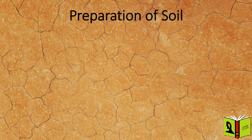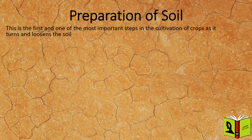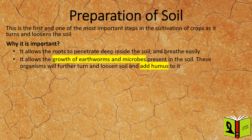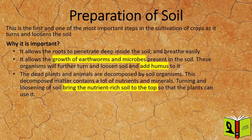Preparation of soil. This is the first and one of the most important steps in the cultivation of crops, as it turns and loosens the soil. It allows the roots to penetrate deep inside the soil and breathe easily. It allows the growth of earthworms and microbes present in the soil. These organisms will further turn and loosen the soil and add humus to it. Dead plants and animals are decomposed by soil organisms. This decomposed matter contains a lot of nutrients and minerals. Turning and loosening of soil brings the nutrient-rich soil to the top, so that the plants can use it.